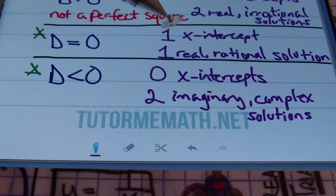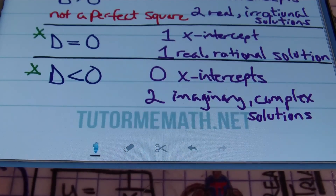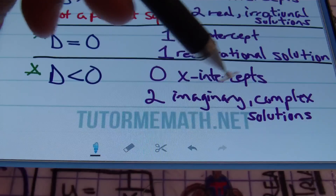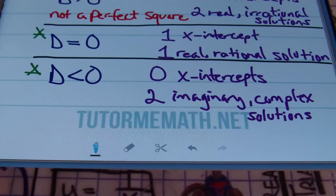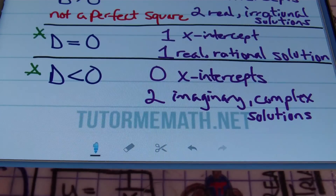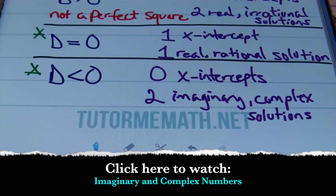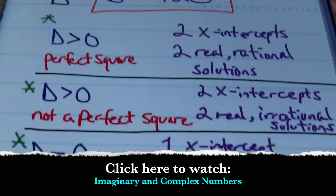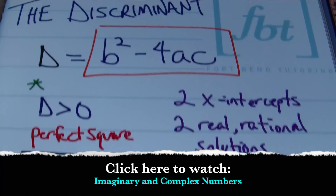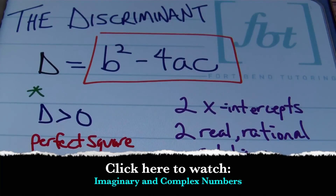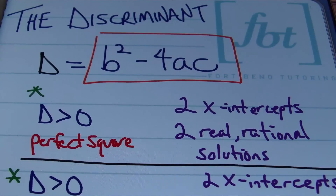When the discriminant is negative, you'll have two imaginary complex solutions, invoking the imaginary number i. That's what you have to look forward to when dealing with the discriminant. Now let's go through six examples.